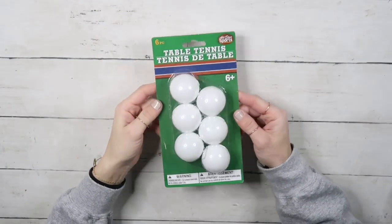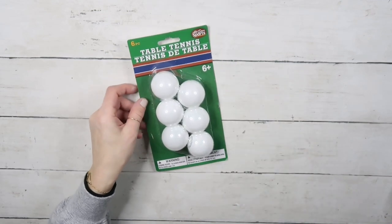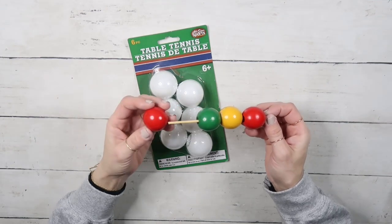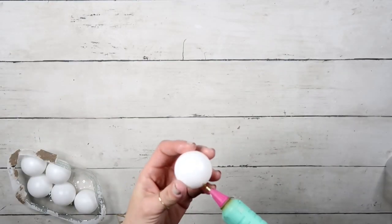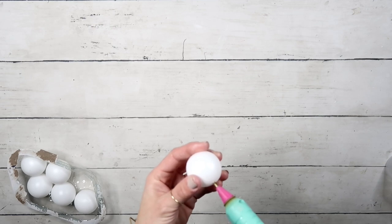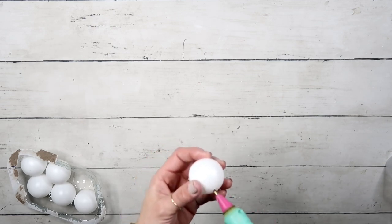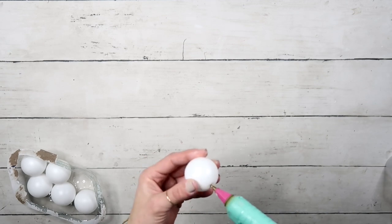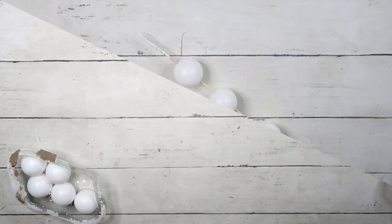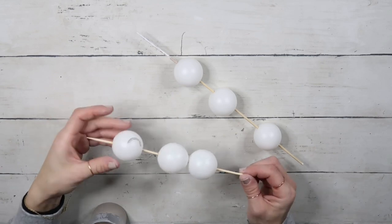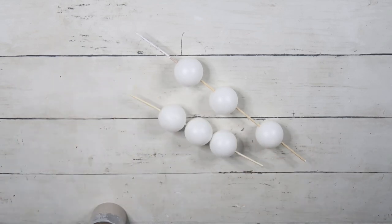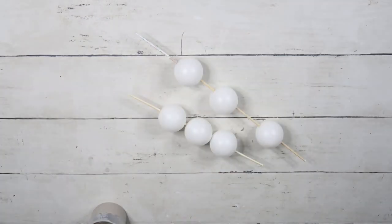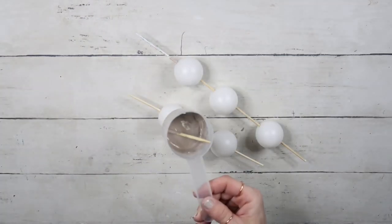DIY number two: I'm using these ping pong balls from the Dollar Tree, six in a package, and these wooden beads that are just ginormous wooden pieces that were actually part of my daughter's game when she was little. I'm using my hot glue gun to create two holes on opposite sides of these ping pong balls.